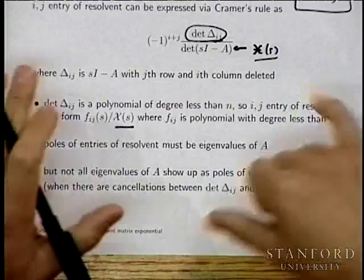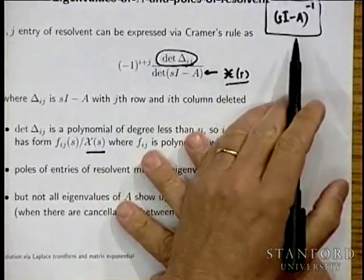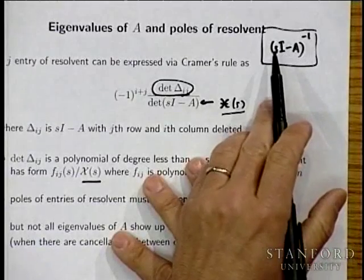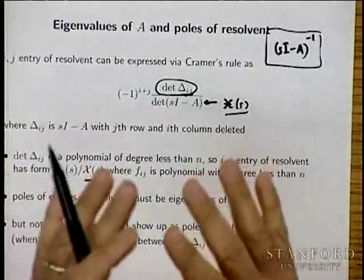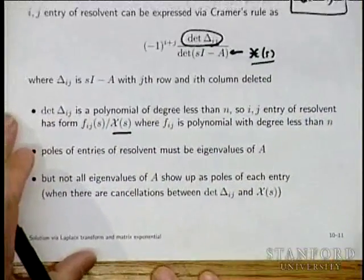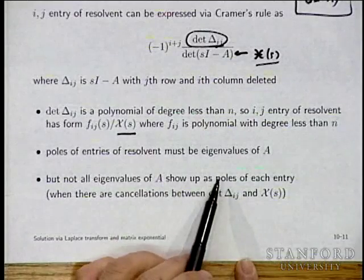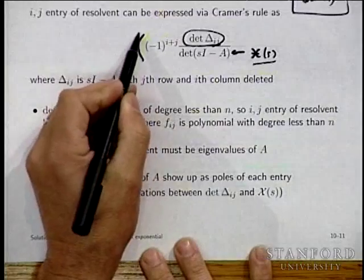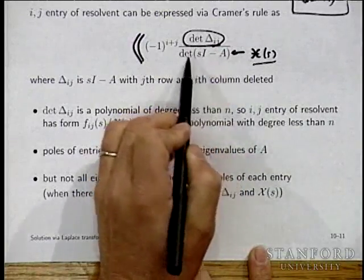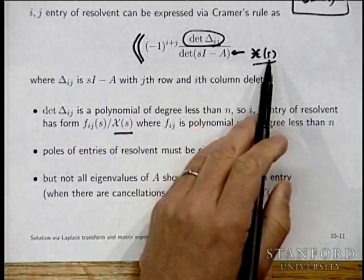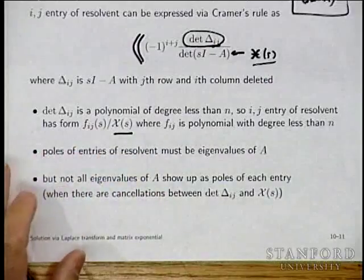Not all eigenvalues of A necessarily show up as poles of every entry of the resolvent. Although each entry has the characteristic polynomial as denominator, in some cases the numerator polynomial will share roots with the characteristic polynomial, and those cancel. The double integrator example shows this: the 2,1 entry of the resolvent is zero — it has no poles at all, even though the eigenvalue is zero with multiplicity two.